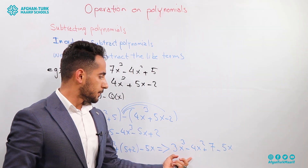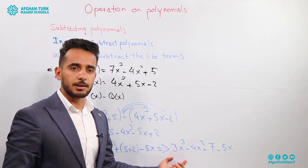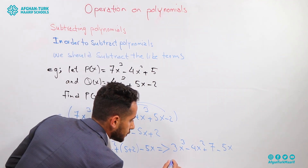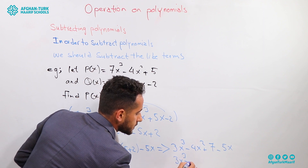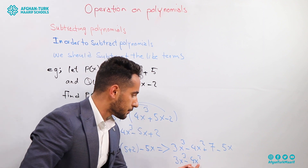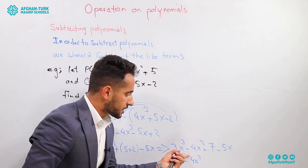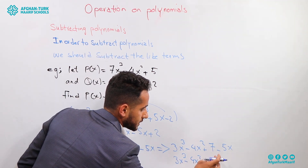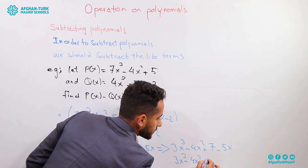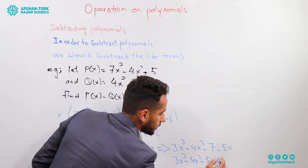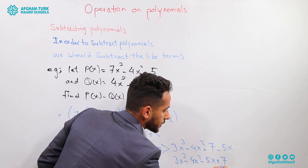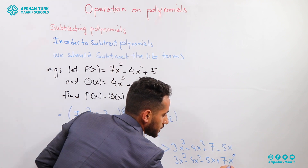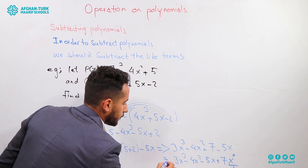This is the answer, but not the final answer — we need to write it in descending form. Descending form means the first term has the highest power: 3x to the power of 3, then minus 4x to the power of 2, then the term with degree 1 which is minus 5x, and the last term is 7 — because 7 can be written as 7 times x to the power of 0, and x to the power of 0 is 1. So this is the final answer.